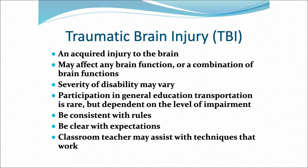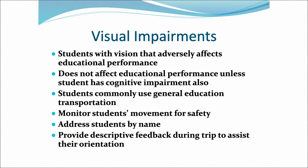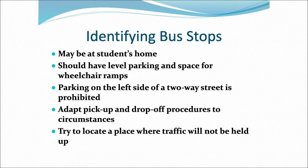Traumatic brain injury, or TBI, is an acquired injury to the brain — they may not have been born with it; it's something that happened to them. It can be mild or severe. Visual impairments mean students can't see clearly or may not understand what they are seeing. It is very important that your bus stops are identified and maintained where they are approved, whether at the student's home or elsewhere, and that loading and unloading areas are safe and off the highway.